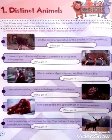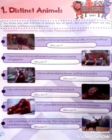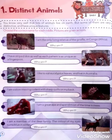Number 4. I am a slow moving rodent with sharp quills on my back. Answer is Porcupine. Number 5.